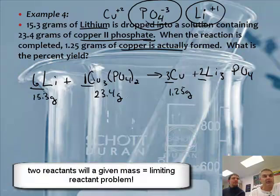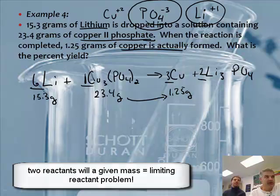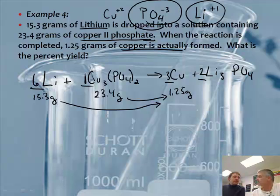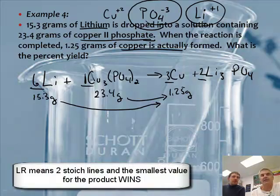And a percent yield problem together. So guys, what we're going to do is convert grams of copper phosphate to grams of copper, and then grams of lithium to grams of copper. The lowest one will win, but then that will be the number. That number needs to be larger than 1.25 in theory. And then we'll divide to find our percentage of yield.